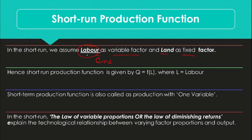In the short run production function, among these two factors, labour is the variable factor and land is the fixed factor — it cannot be changed. The quantity of labour can be added on. So the production function for the short run comes out to be Q is a function of L, where L is labour. Whatever change there is in the units of labour will have some kind of effect on the total output quantity generated. This is also called the production function with one variable, because only one factor is variable and the other factors are fixed.